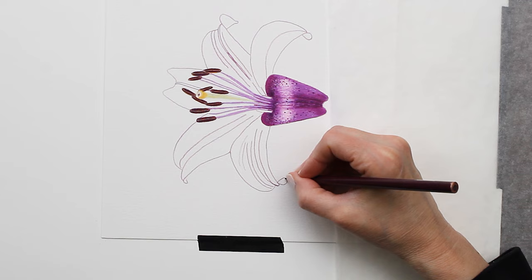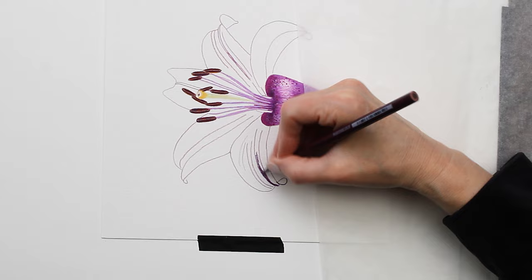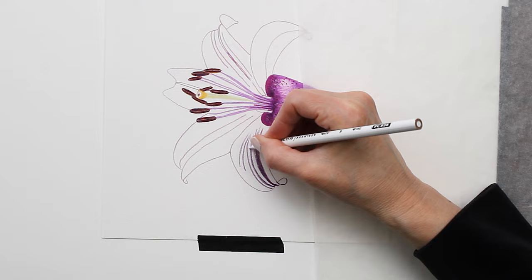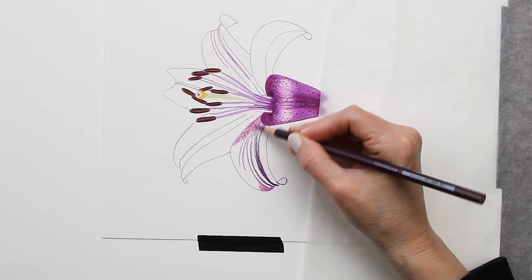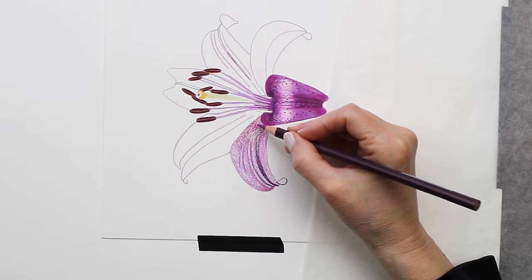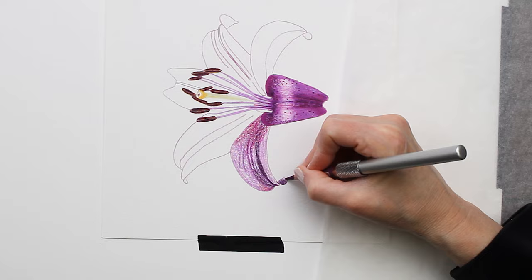And now moving on to the second petal, my general process moving through was to block in the shadow areas using my darkest pencils, which in this case was my Prismacolor Dark Purple and Dahlia. And then I blocked in where I wanted the highlights to go using a white Prismacolor pencil and then came through with more of my mid-tone colors.